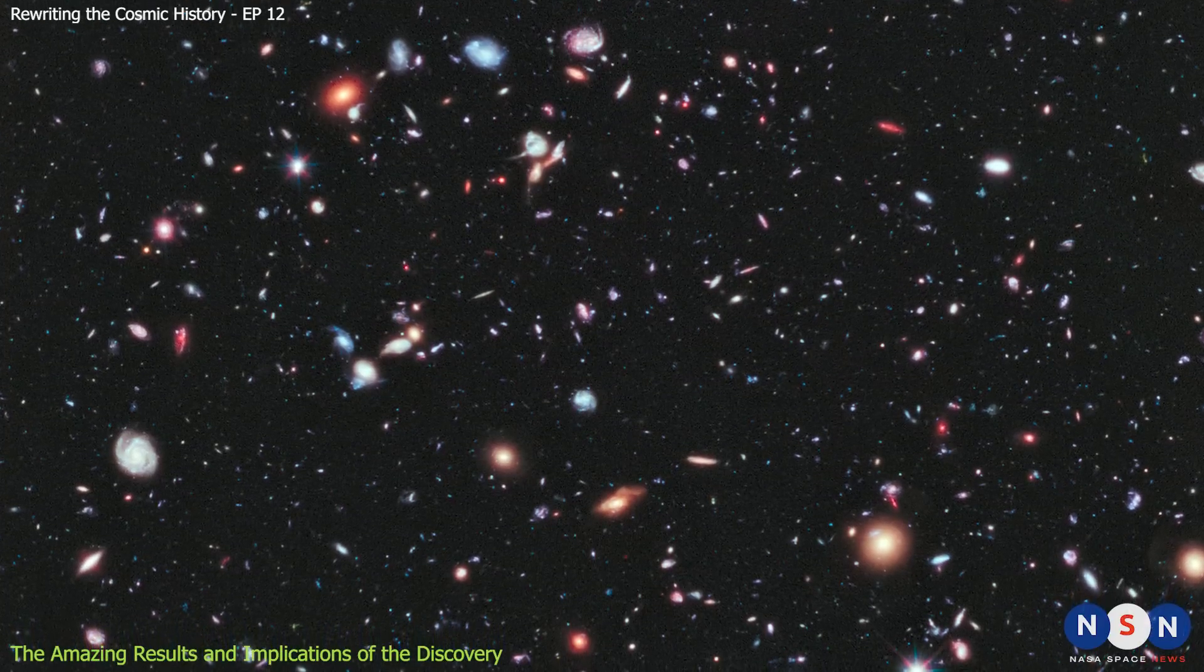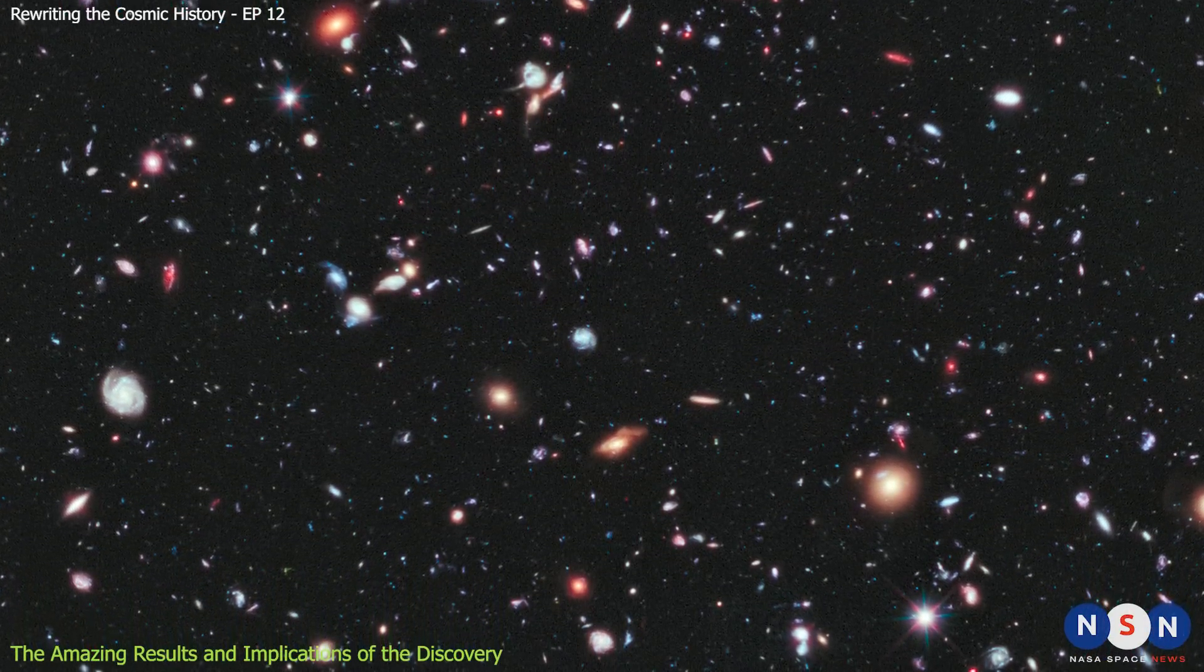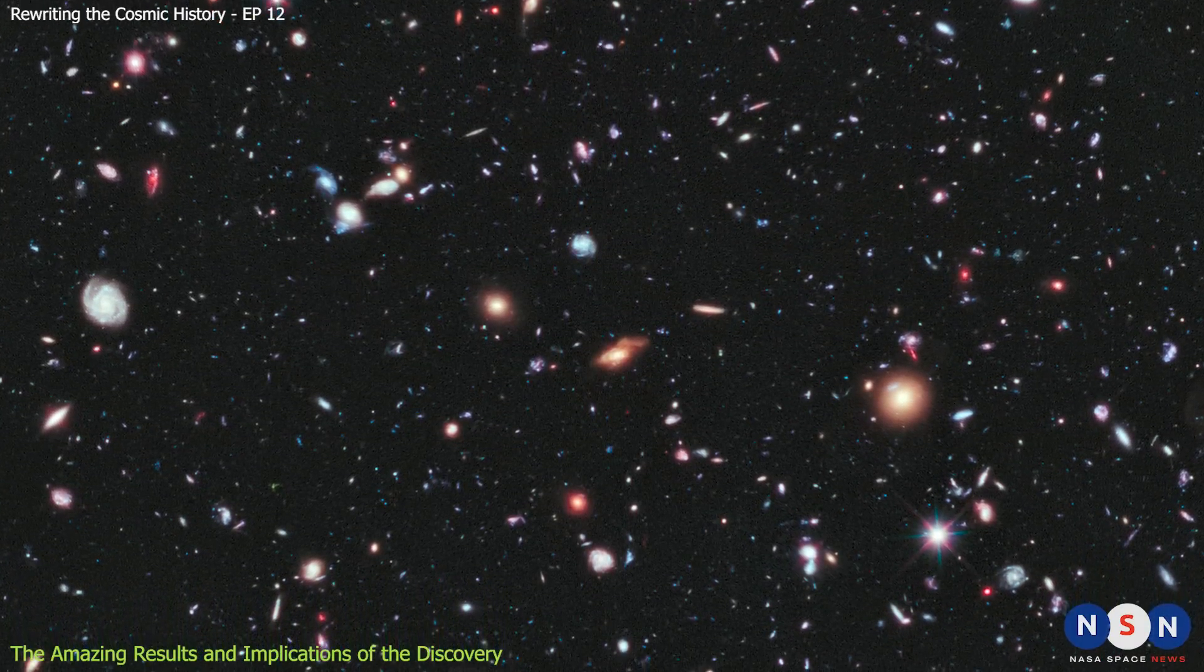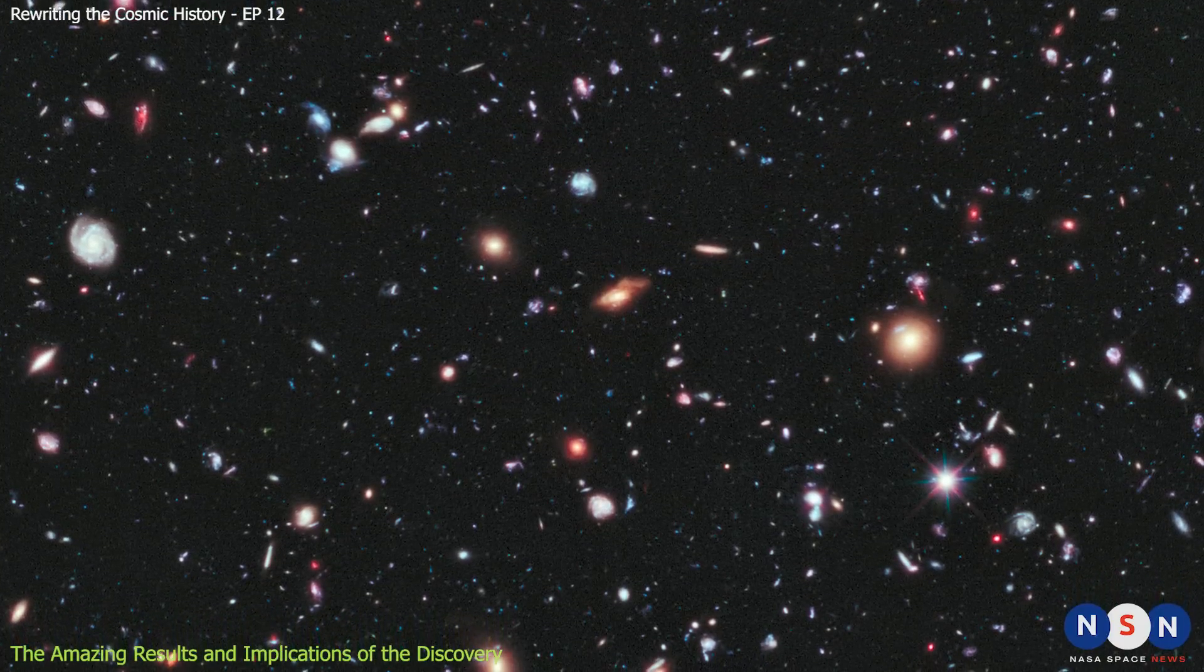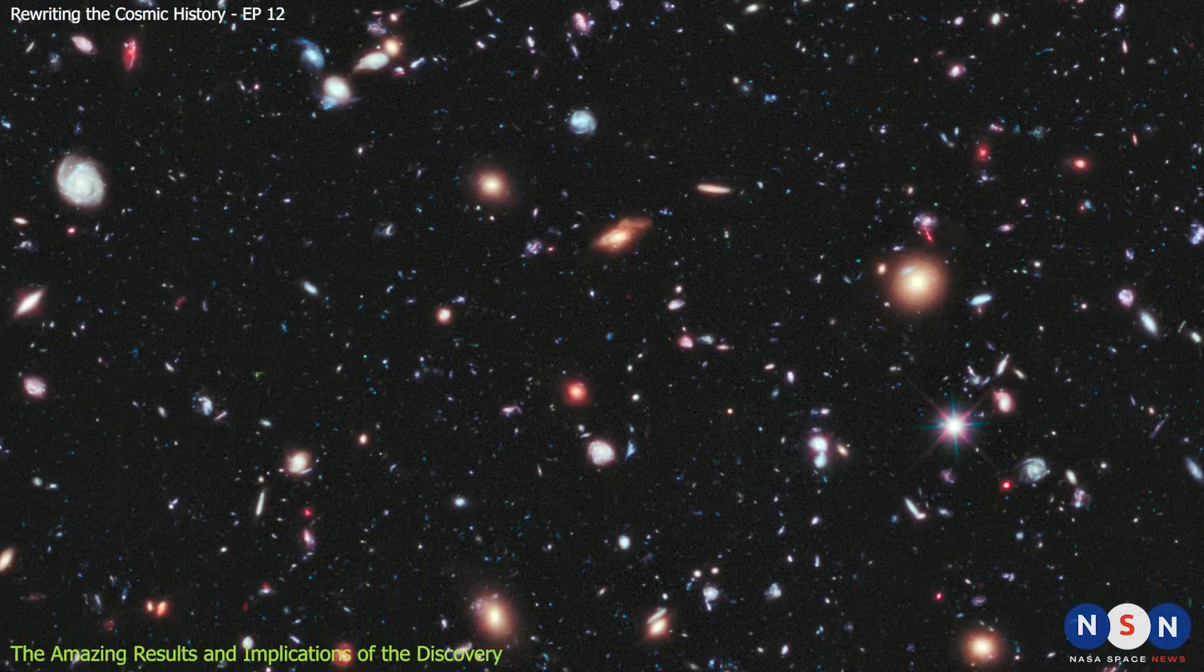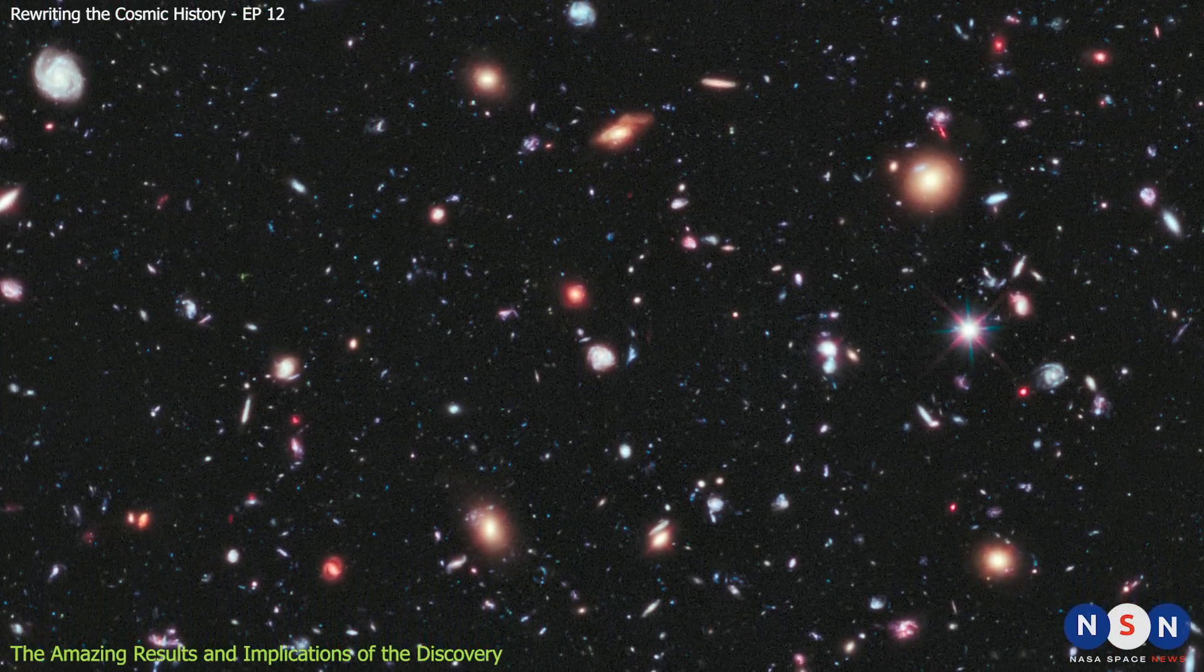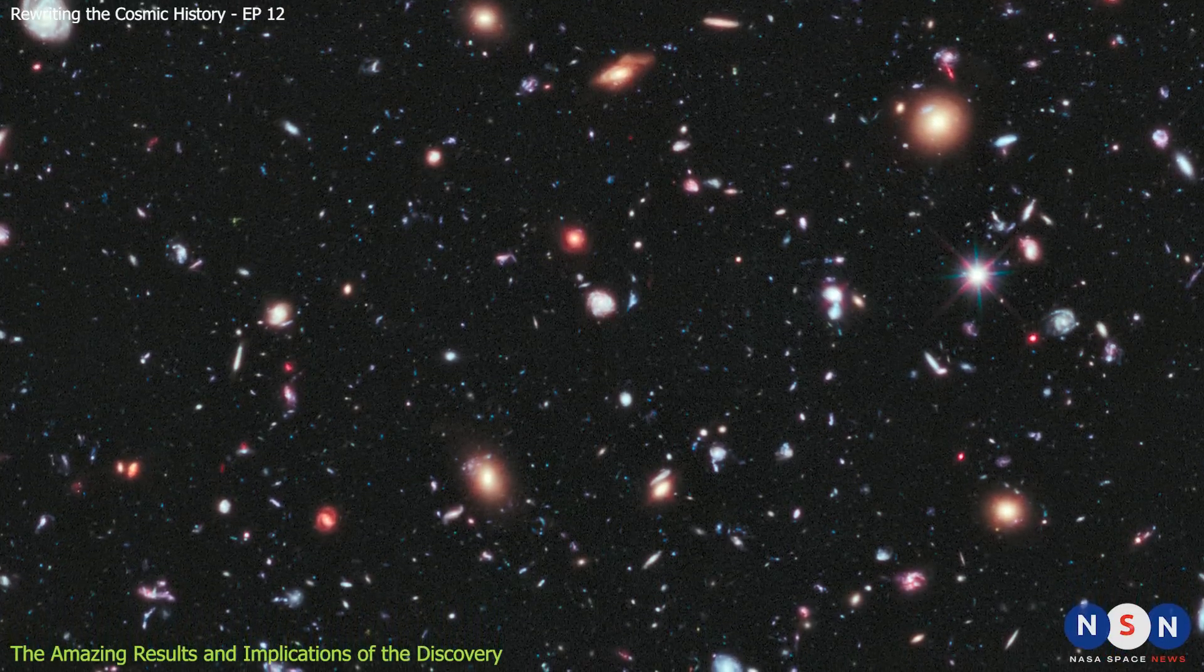The results were amazing and surprising. The 12 galaxies are forming stars at very high rates, comparable to or higher than some of the most active galaxies in the local universe. They are also producing enough photons to ionize their own gas and contribute to reionization. They are also allowing a significant fraction of their photons to escape their galaxy and ionize more gas. These properties suggest that these galaxies are very important for understanding reionization and its impact on the universe.